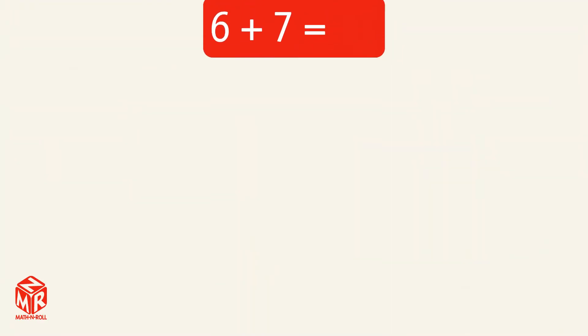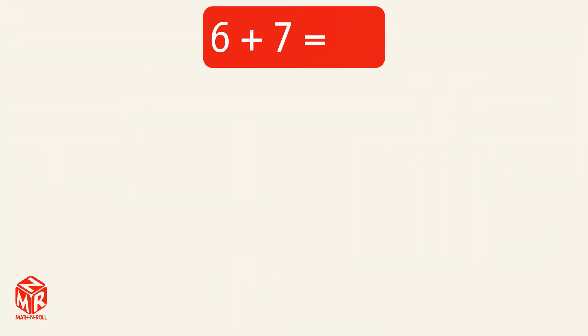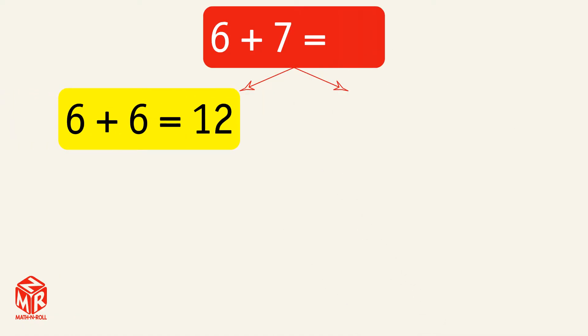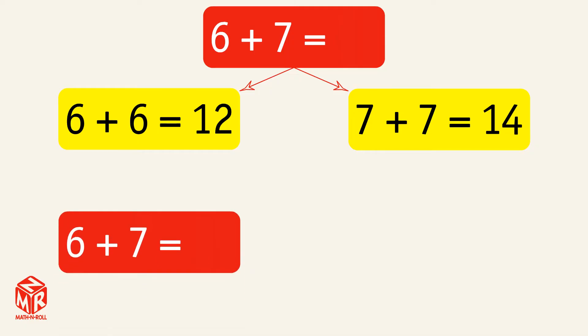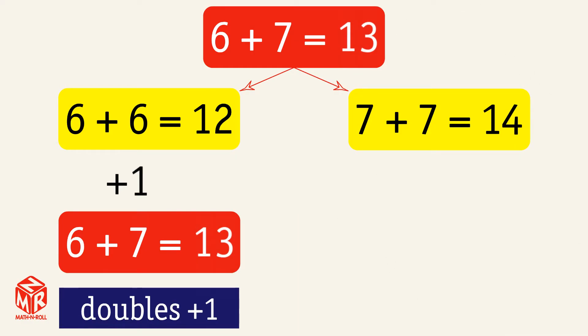Let's do another example: 6 plus 7. We can use two different doubles facts to solve: 6 plus 6 equals 12, and 7 plus 7 equals 14. Let's use 6 plus 6 equals 12 first. We need 6 plus 7, which is one more, so we add 1 to our doubles fact. 12 plus 1 equals 13, and 6 plus 7 equals 13. We just used the doubles plus 1 strategy.